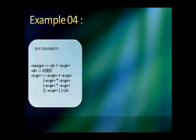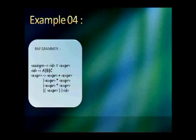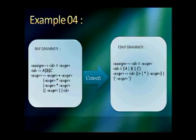The BNF grammar for example 4 is as follows. An assignment is described by an id equal to an expression, and an id is described by a, b, or c. An expression is described by expression plus expression, or expression times expression, or just an id. The converted EBNF grammar reduces the number of statements by using the pipe operator.